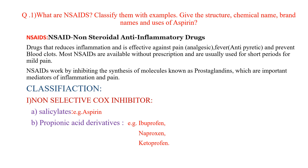NSAIDs work by inhibiting the synthesis of molecules known as prostaglandins, which are important mediators of inflammation and pain. Next: classification of NSAIDs.